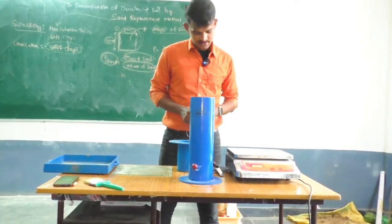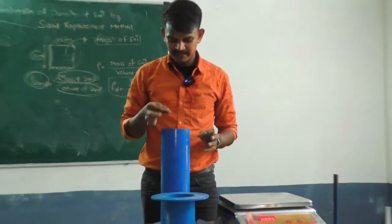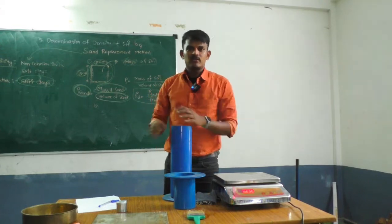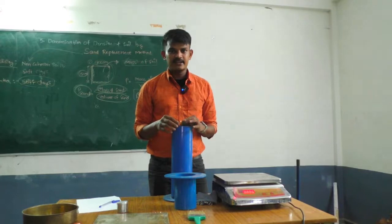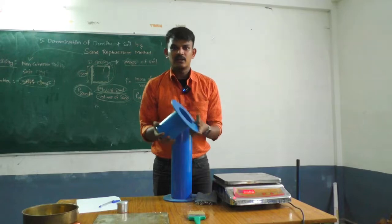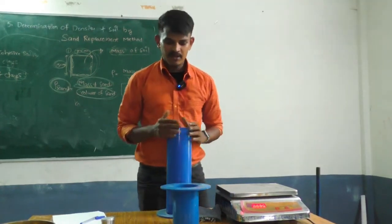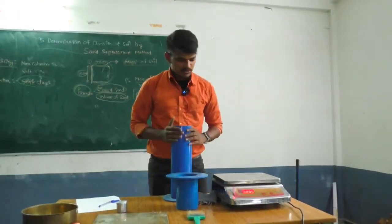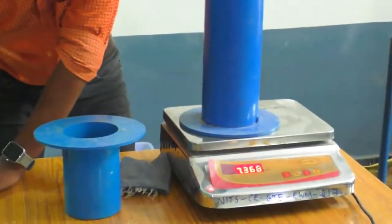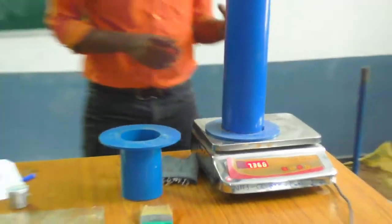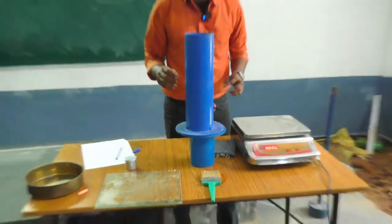The most important step is finding the density of the sand used for calibration. Density is mass divided by volume. We have a cylindrical container of diameter 10 cm and height 15 cm — so the volume is known. We need to measure the weight of sand completely filling this container. The initial reading of the sand pouring cylinder before pouring is 7369 grams. We then release the shutter to pour sand into the container.